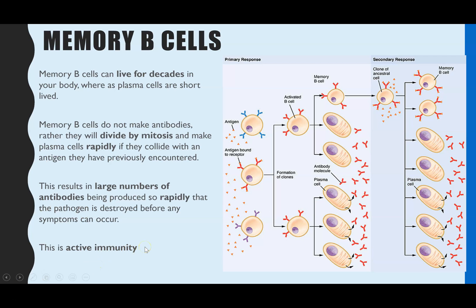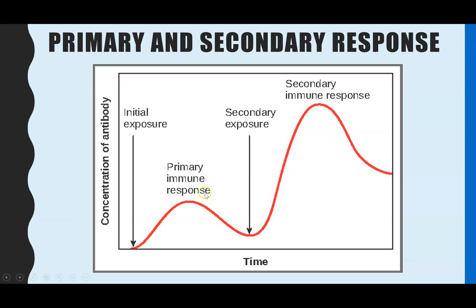This is what we mean by active immunity — you've been exposed to the pathogen to gain immunity. A graph of antibody concentration over time demonstrates this: the first time you're exposed to the pathogen, you can't produce as many antibodies and it takes much longer. But after storing memory B-cells, upon reinfection they differentiate rapidly into plasma cells, producing large quantities of antibodies in a very short space of time, meaning you destroy the pathogen before you get symptoms.